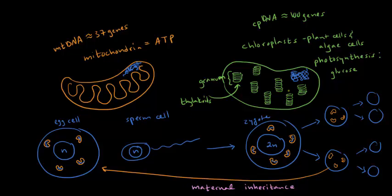So both mitochondria and chloroplasts exhibit maternal inheritance because they are in the egg cell that eventually becomes the organism.